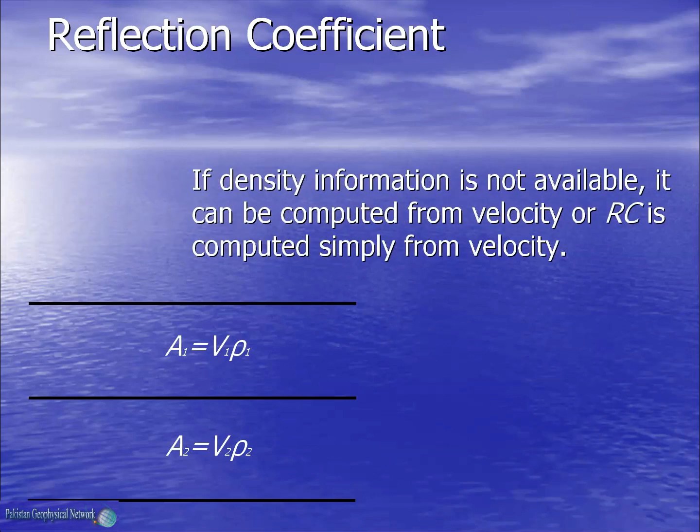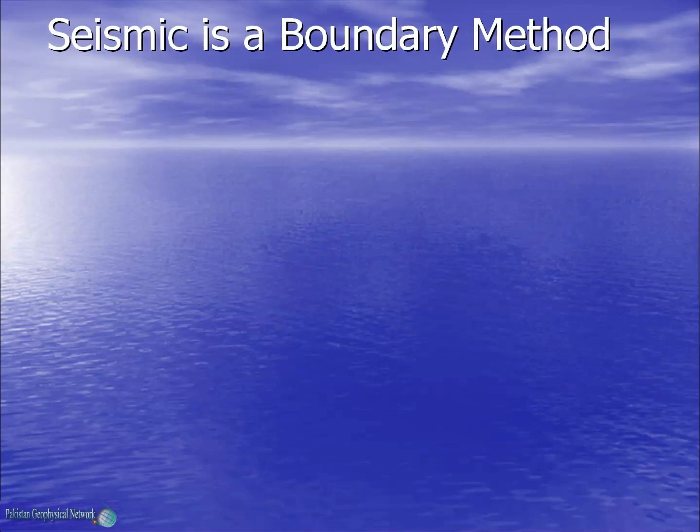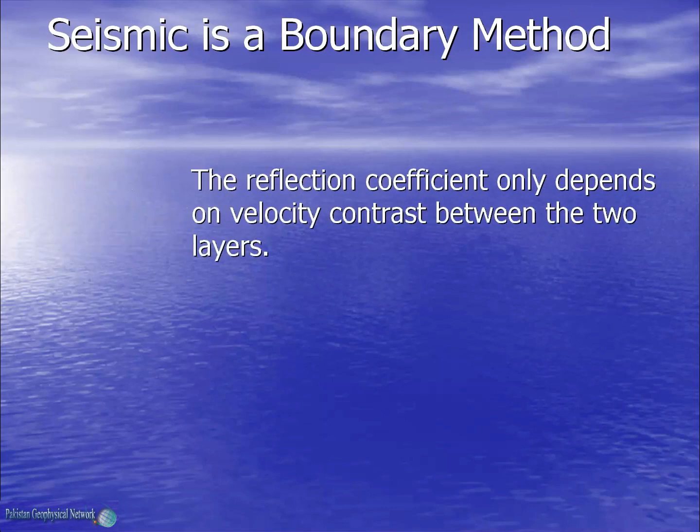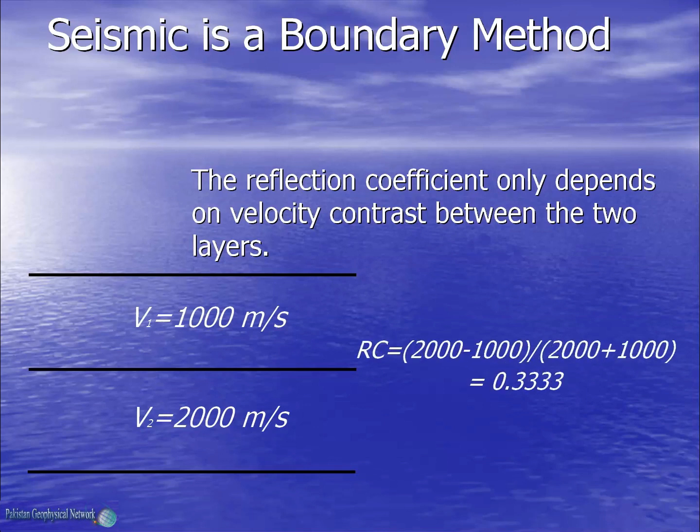If the density information is not available, we can simplify the equation with just the velocity values. Now we would see that seismic is a boundary method rather than a volume method. The reflection coefficient only depends on velocity contrast between the two layers. So if we have two layers with velocities 1000 meters per second and 2000 meters per second, we will have a reflection coefficient of 0.33.